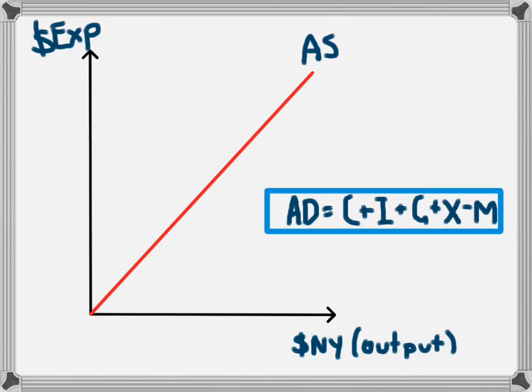The equation for aggregate demand is AD equals C plus I plus G plus X minus M. We'll break this down into the sectors of the economy.